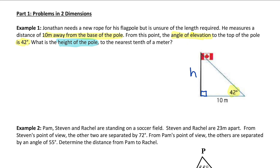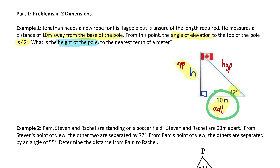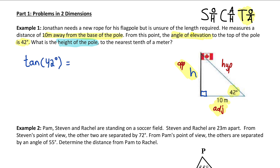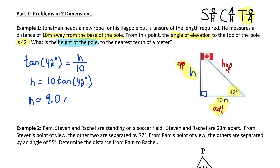With 42 degrees as the reference angle, the height of the pole is the opposite side and the 10 meters is the adjacent side. Since we need opposite and know adjacent, we use tan. So tan(42°) = height / 10. Isolating the height by multiplying both sides by 10, the pole is approximately 9.0 meters tall.